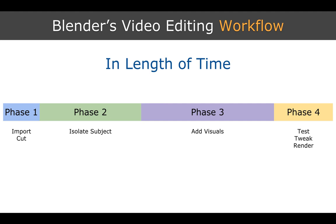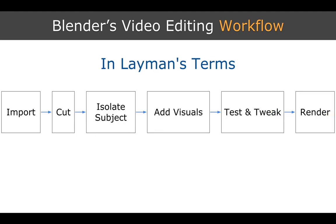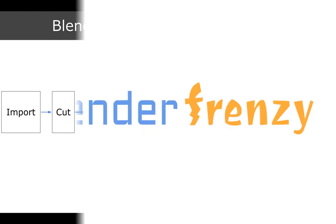Like I was saying before, if you don't need to isolate your subject or remove that background, you can actually skip phase two, and that's going to save you a lot of time. So once again, big picture: you import, you cut, you isolate your subject, add your visuals, test and tweak, and then you render. That is my Blender video editing workflow. So with that said, let's get to it.